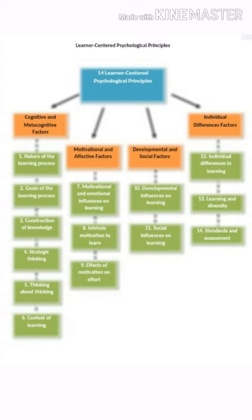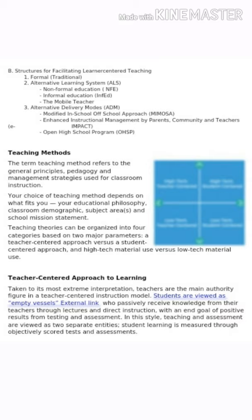Number eight is intrinsic motivation to learn and number nine is effects of motivation on effort. For developmental and social factors, we have number ten, developmental influence on learning, and number eleven, social influences on learning. For individual differences factors: number twelve is individual differences in learning, number thirteen is learning and diversity, and number fourteen is standards and assessment.